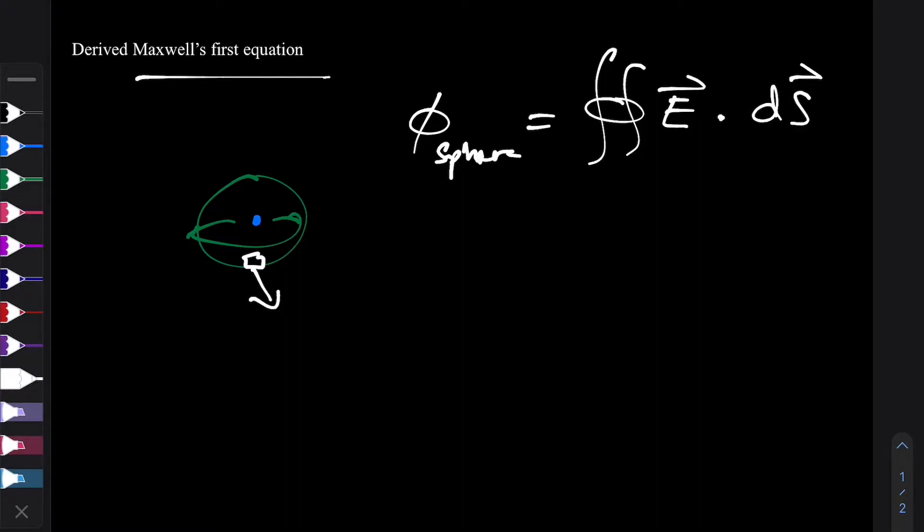Well, first off, we know that E and ds point in the same direction because electric fields are radially symmetric by Coulomb's law, so we can turn this dot product into regular, plain old scalar multiplication of E and ds. So the integral is less nasty now.